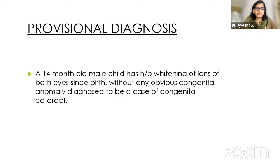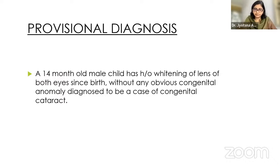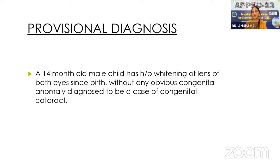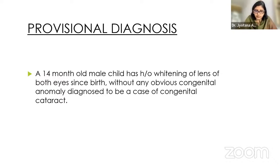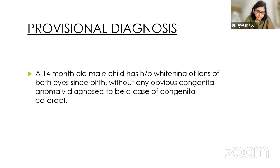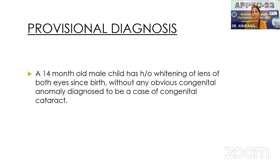Key goals include: preventing rise in intraocular pressure, ensuring a completely relaxed patient intraoperatively, and prevention of PONV. For pre-medication, oral midazolam 0.5 mg/kg — in this child, 5 mg orally — is given 15–30 minutes pre-operatively. Alternatives include oral chloral hydrate 15 mg/kg (500 mg) 30–45 minutes pre-operatively, or intranasal dexmedetomidine 2 mcg/kg (20 mcg) 30–60 minutes pre-operatively.